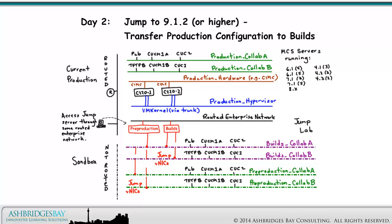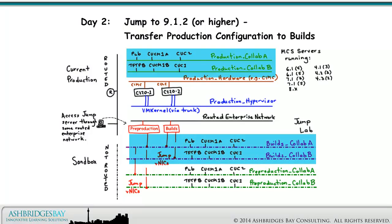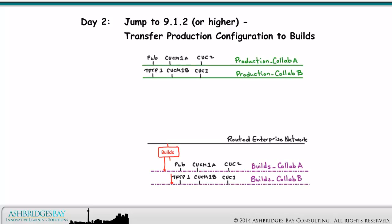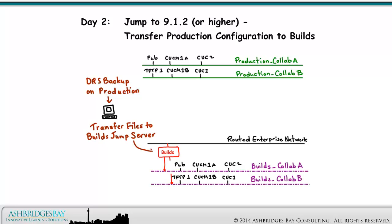This is an overview of the Jump Lab. This drawing looks at activities on the Production and Builds Cluster collab VLANs. In this drawing, we use DRS to transfer the current Production Configuration to the Builds cluster. First, we do a DRS Backup on the Production cluster, then transfer the files to the Builds Jump server, then do a DRS Restore on Builds.